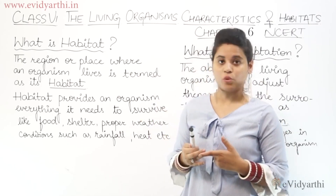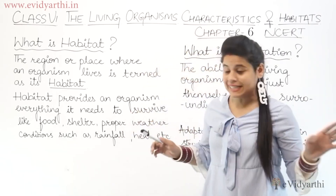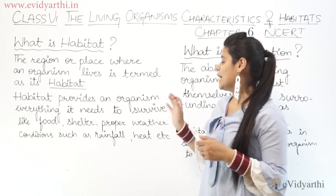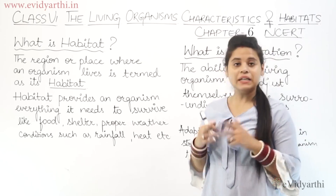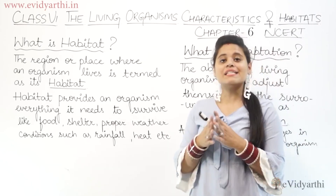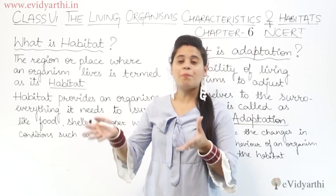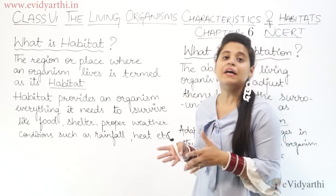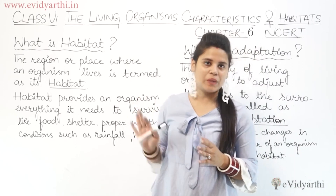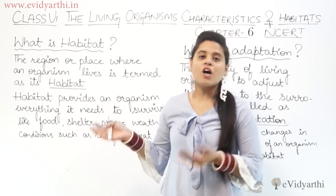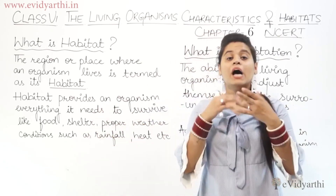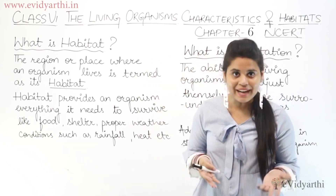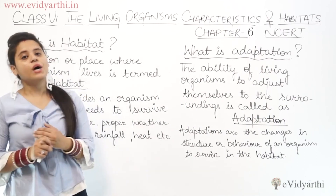Whether it is animals or humans, habitat provides an organism everything it needs to survive. What do you need to survive? Things like food, shelter, and proper weather conditions such as rainfall. If we talk about human beings — if we go to Mars, we will not get these things there, and therefore life is not possible there.